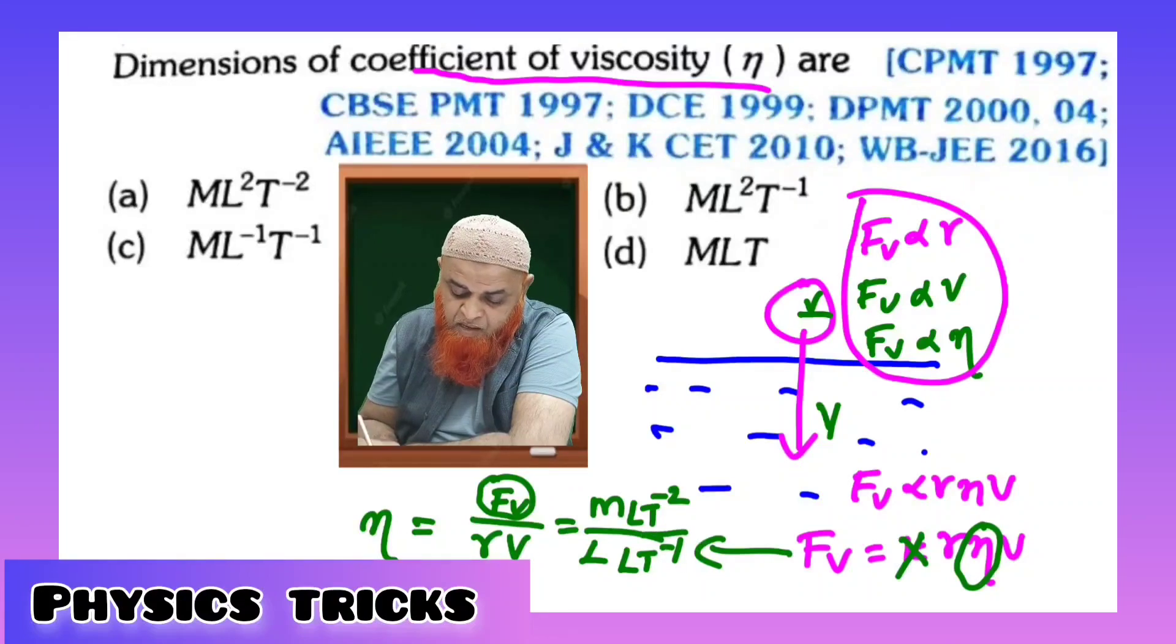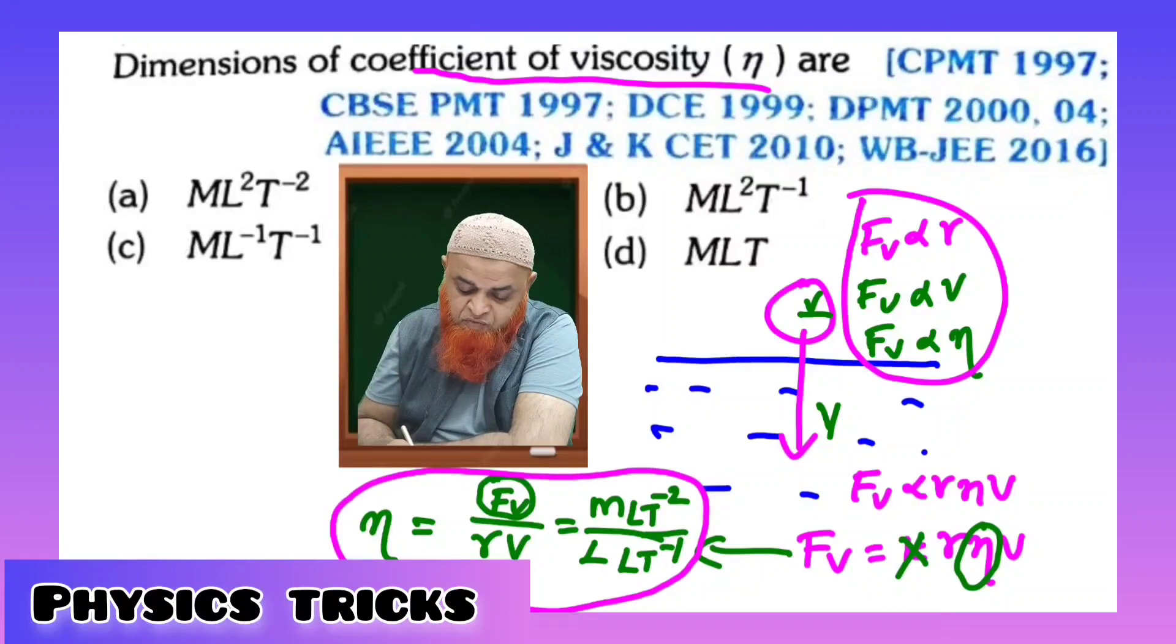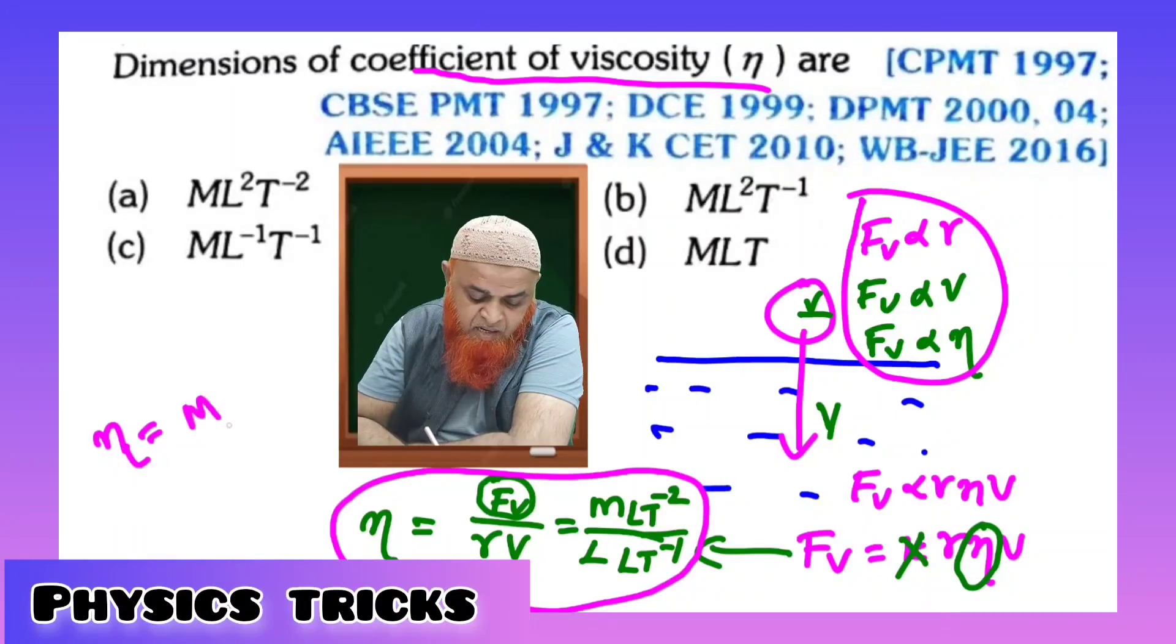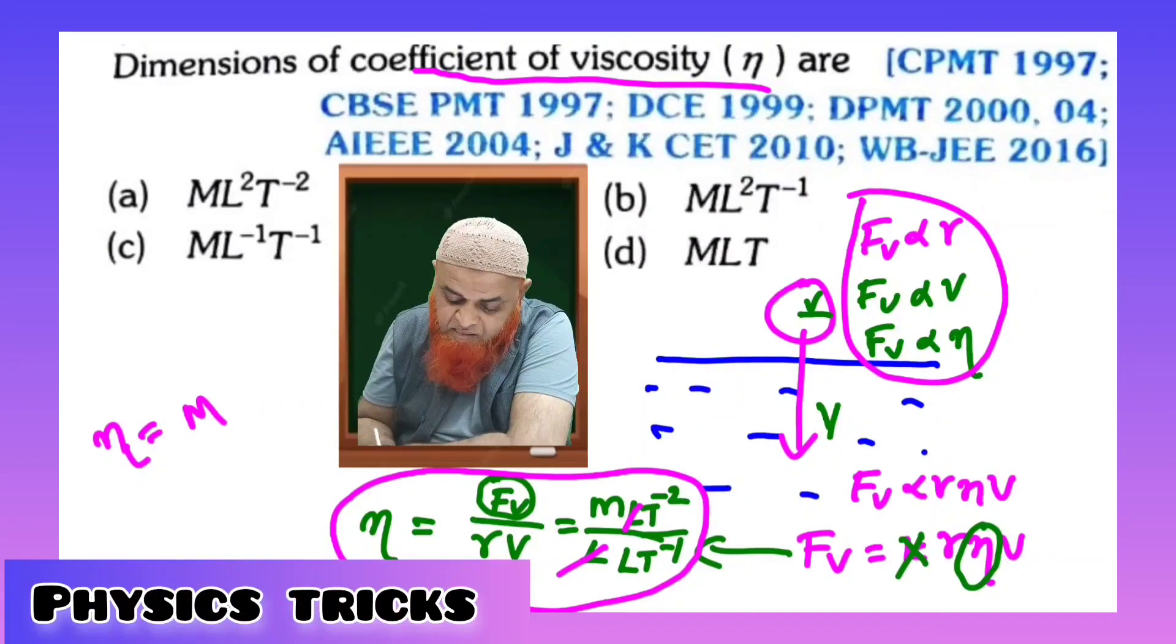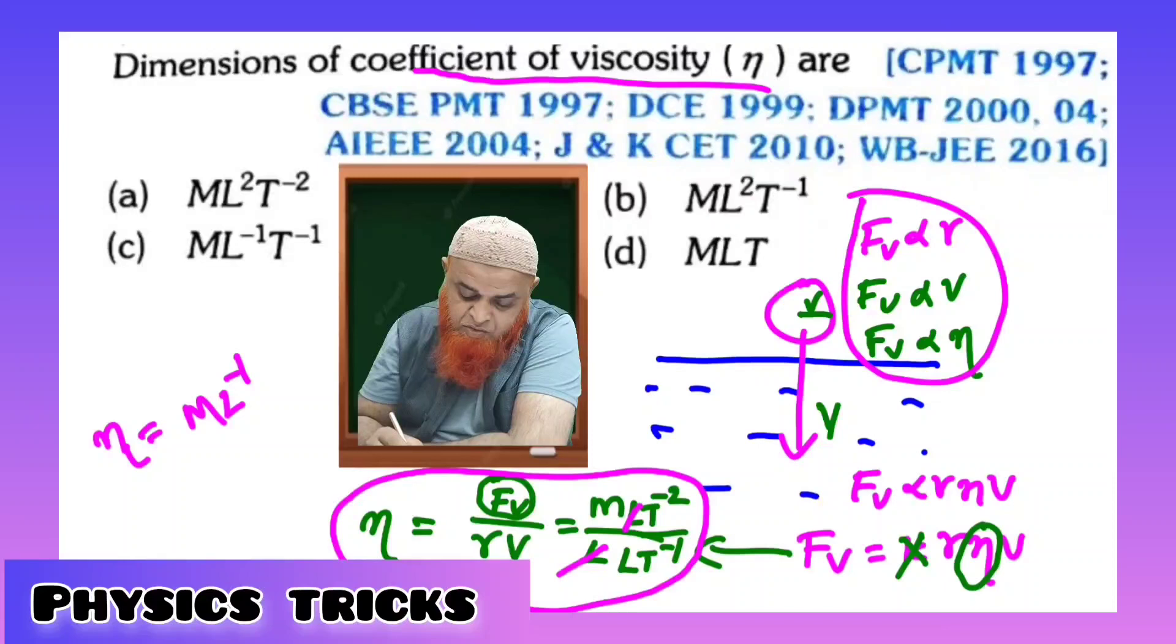Okay, LT^-1. So if you simplify all these terms, finally we're getting eta is equal to, what is left? M is there, and what is going to cancel? L and L get cancelled here, so we have L^-1.